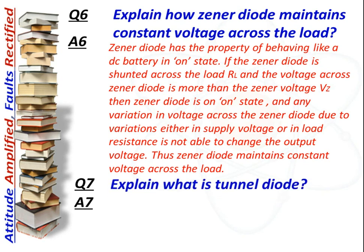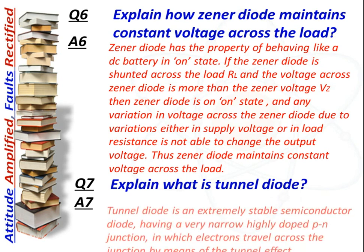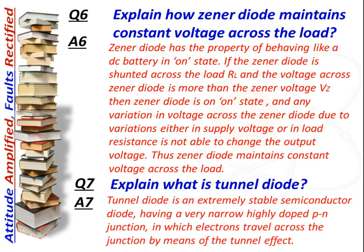Next question: What is a tunnel diode? Answer: A tunnel diode is an extremely stable semiconductor diode having a very narrow, highly doped p-n junction in which electrons travel across the junction by means of the tunnel effect.